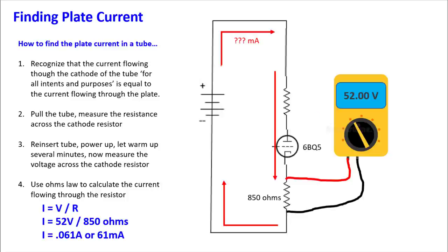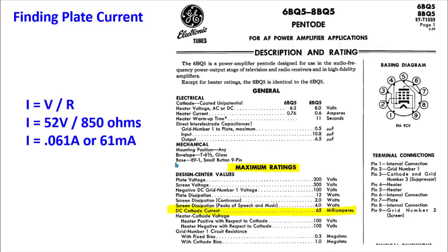In case you're wondering how to find which pin is the cathode: it's always the little flat plate at the bottom of the tube. In this case, pin number 3 was our cathode. We measured from pin 3 of that tube down to ground to find our resistance and voltage values.